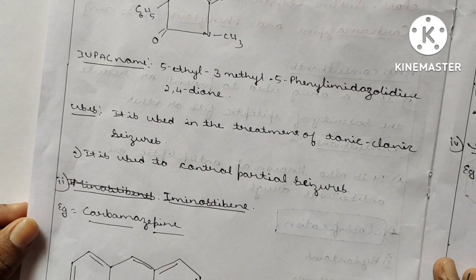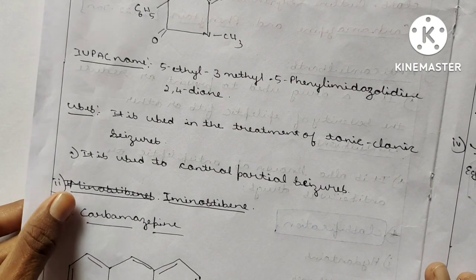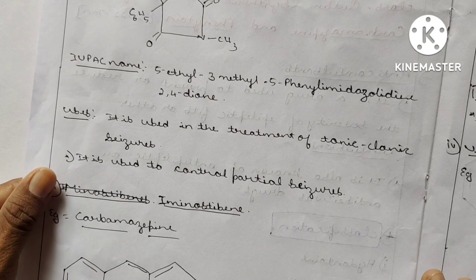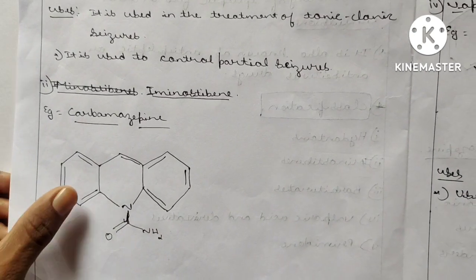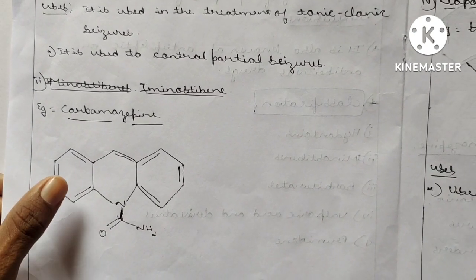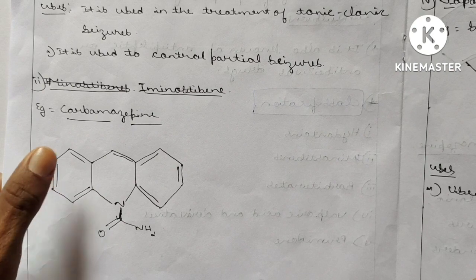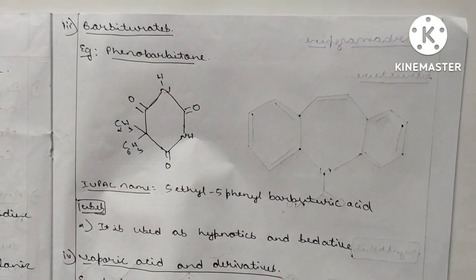Next one is iminostilbene. Example here is carbamazepine. This is the structure of the carbamazepine. See, go through this structure.